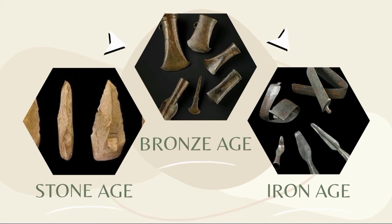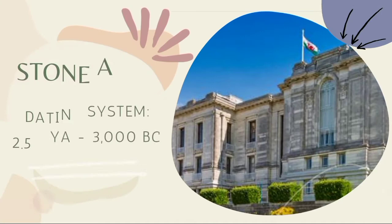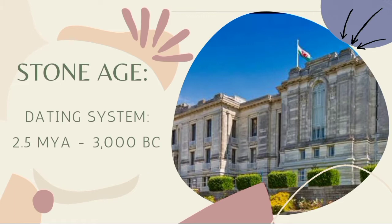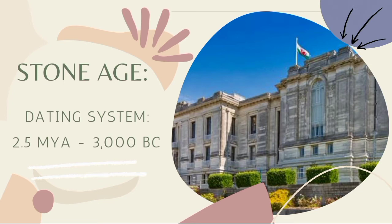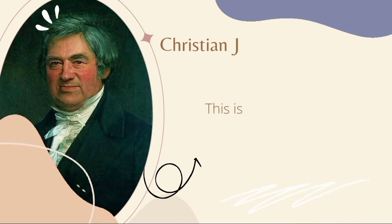Artifacts made from stone are classified under the Stone Age. Weapons or tools made from an alloy of copper and tin are under the Bronze Age, while collections made from melted iron, steel, and other metals are from the Iron Age. The entire Stone Age is a long period, with its dating system ranging from 2.5 million years ago up until 3,000 years before Christ.